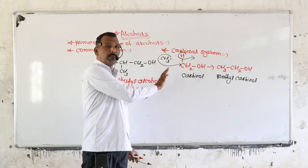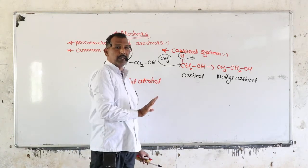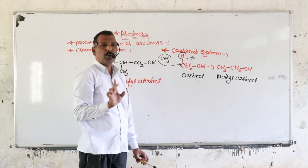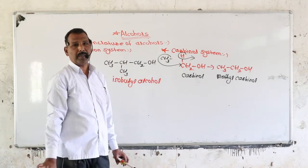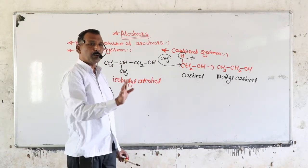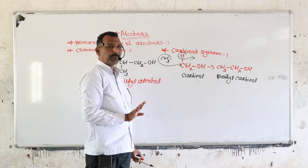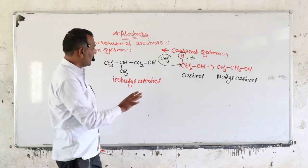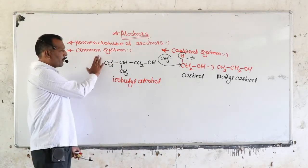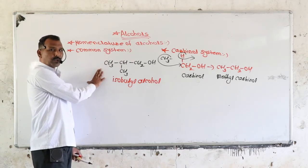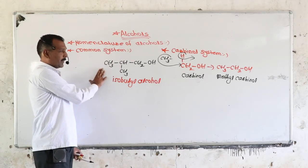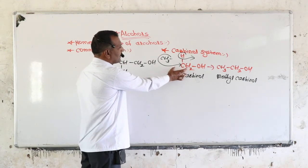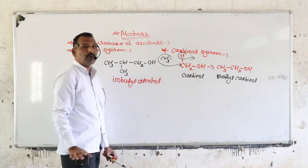Again, if different alkyl groups are present, we have to follow alphabetical order — which group comes first alphabetically. So we have seen how to write the common name of alcohols, and in addition, the Carbinol system.